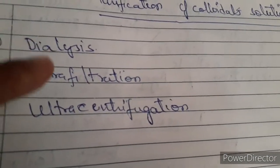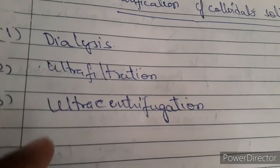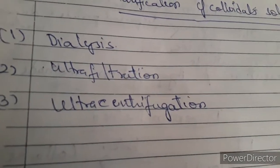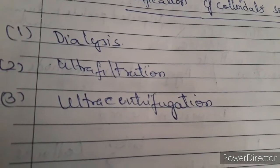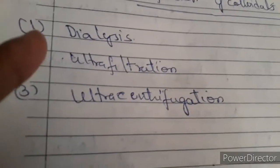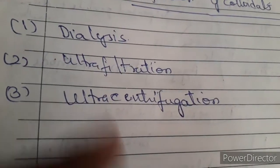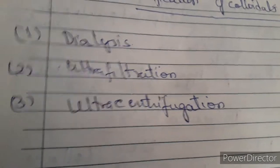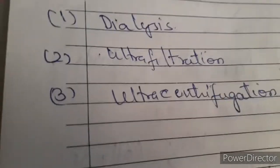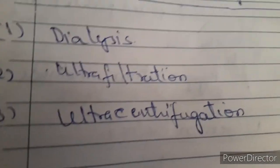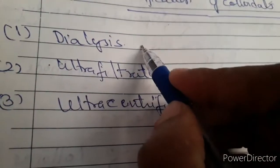For purification, we have three important processes, and direct questions are also asked on these. First is dialysis, second is ultrafiltration, and third is ultracentrifugation. We will talk about each one by one, starting with dialysis.